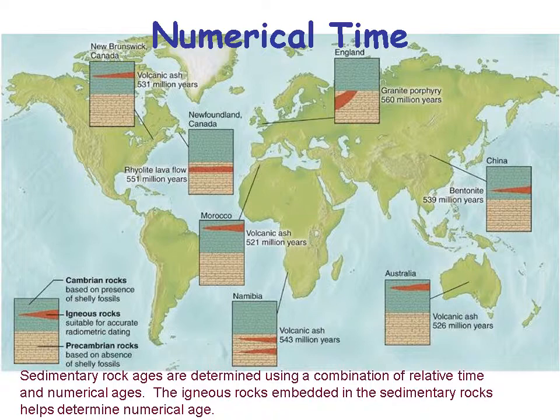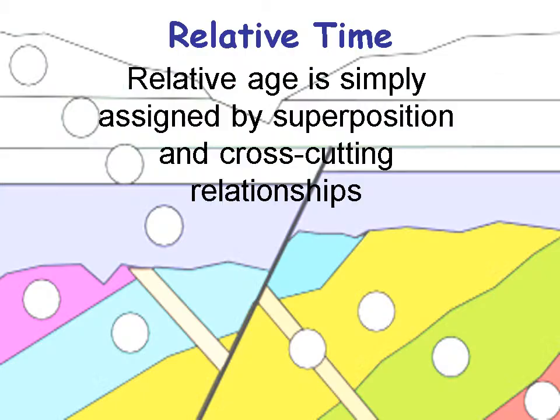Relative age is assigned by superposition and cross-cutting relationships — it's a fairly simple concept that gets complicated when the geology gets complicated. Superposition simply means something is on top of something else. Cross-cutting relationships mean that if something cuts through something else, it's younger. Relative time just means: is something younger or older than something else?